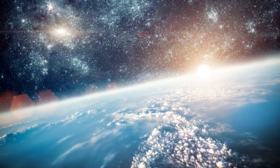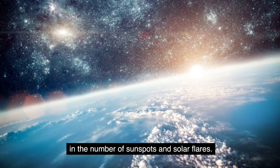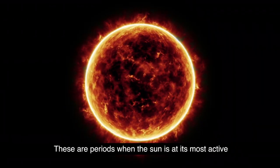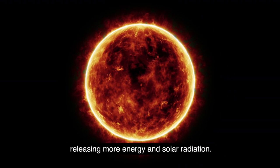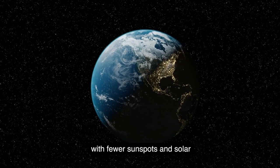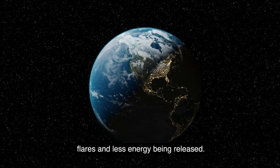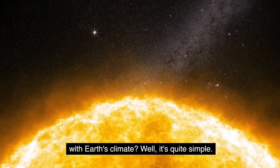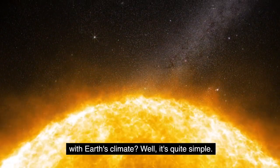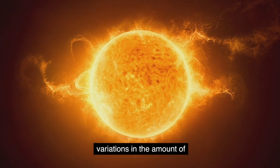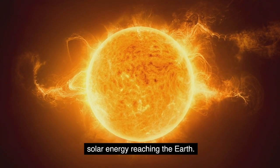Solar maximums are characterized by an increase in the number of sunspots and solar flares. These are periods when the sun is at its most active, releasing more energy and solar radiation. Conversely, during solar minimums the sun is quieter, with fewer sunspots and solar flares, and less energy being released. Now you may be wondering, what does this have to do with Earth's climate? Well, it's quite simple. These fluctuations in solar activity can cause slight variations in the amount of solar energy reaching the Earth.